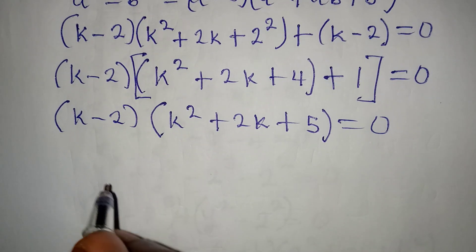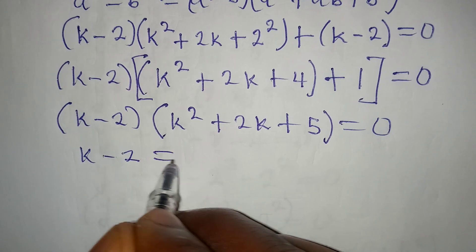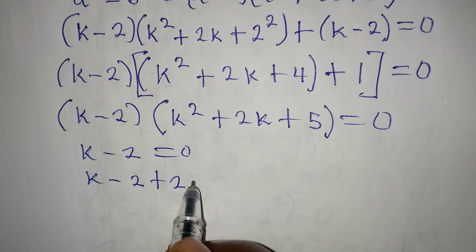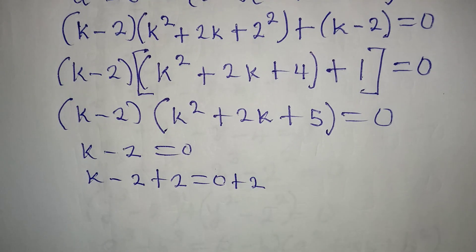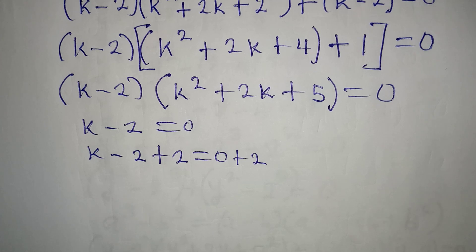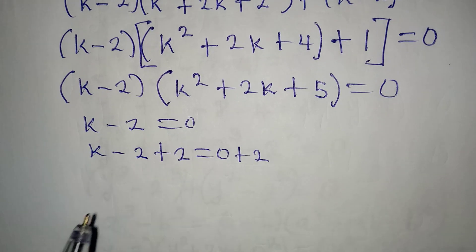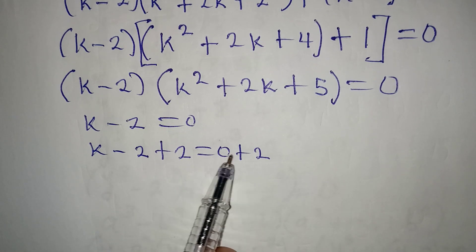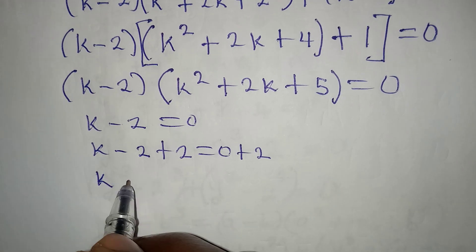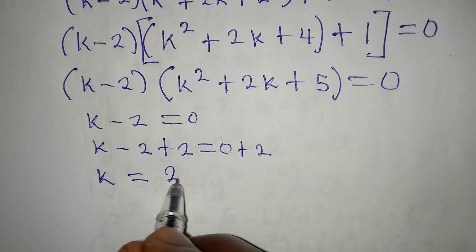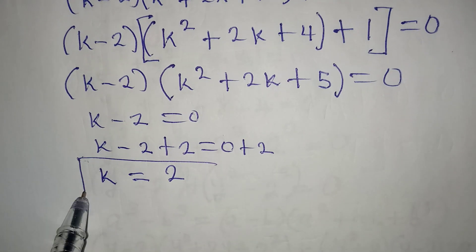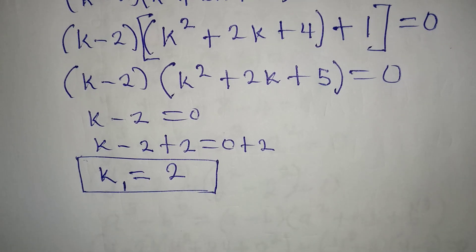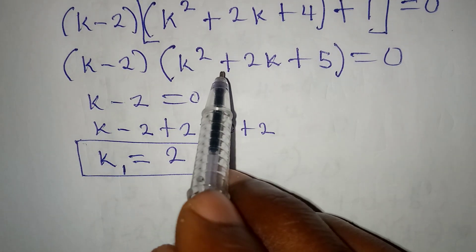Applying the zero product rule: k minus 2 equals 0, so adding 2 to both sides using the additive inverse, minus 2 plus 2 gives 0, and it must reflect on the right side as well. So k equals 2. This is the first value, k₁ equals 2. To get the other values of k, we work with the quadratic expression.